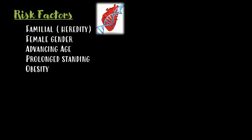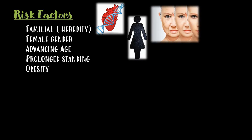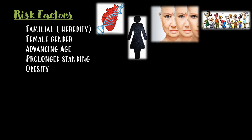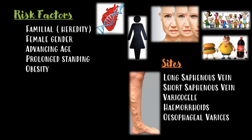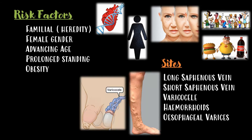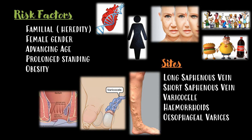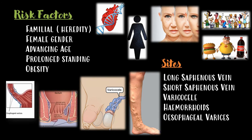The risk factors that lead to the formation of varicose veins may be familial inheritance or heredity, female gender, advancing age, prolonged standing, or obesity. The major sites where varicose veins can be seen are the long and the short saphenous veins, or they may be present as a varicocele, hemorrhoids, or esophageal varices.